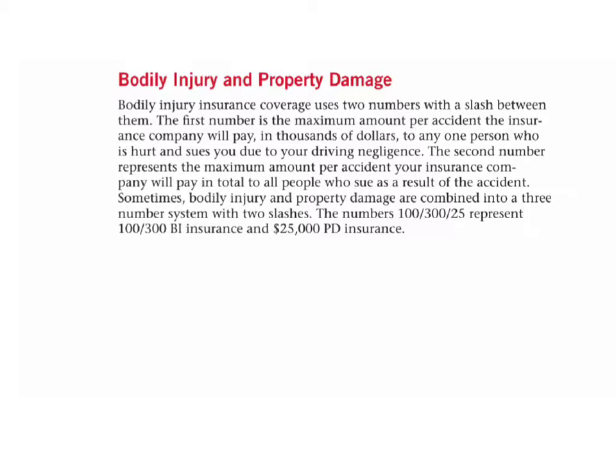Here's a bit about bodily injury and property damage. Bodily injury insurance coverage uses two numbers with a slash between them. The first number is the maximum amount per accident the insurance company will pay in thousands of dollars to any one person who is hurt and sues you due to your driving negligence. The second number represents the maximum total per accident paid to all people who sue. Sometimes bodily injury and property damage are combined into a three-number system, such as 100/300/25, representing 100/300 BI insurance and $25,000 PD insurance.